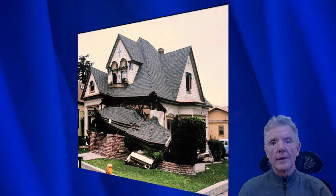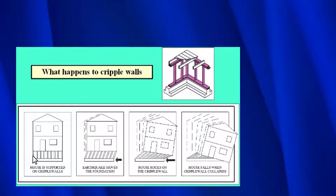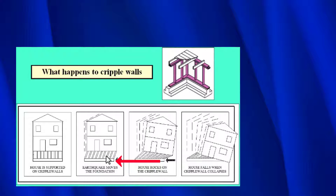Here's a good example of how cripple walls collapse. This is the cripple wall itself, here is the foundation, and this is the floor you walk on. You can see where the ground has moved underneath the house, and when that happens, inertia causes the cripple wall to lean. As the earthquake continues, inertia causes it to lean even more and eventually you end up with complete collapse.